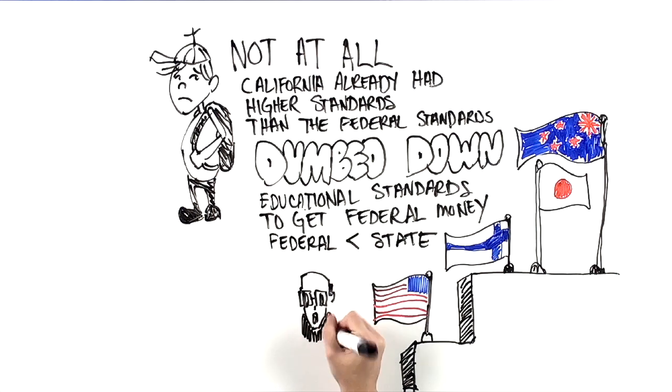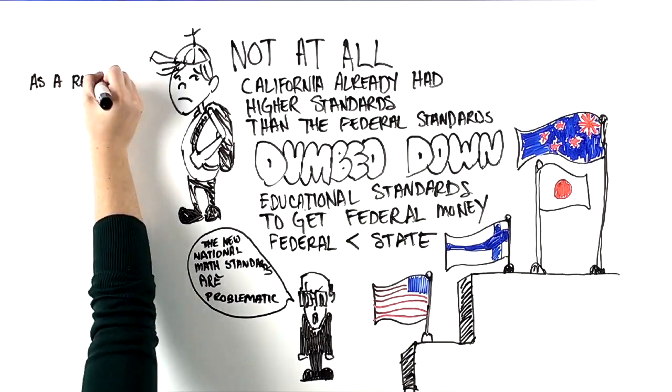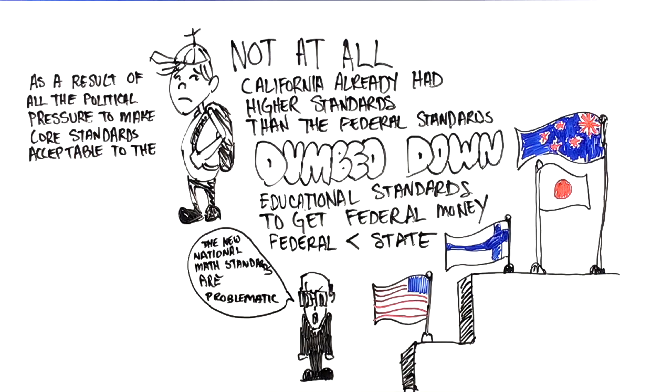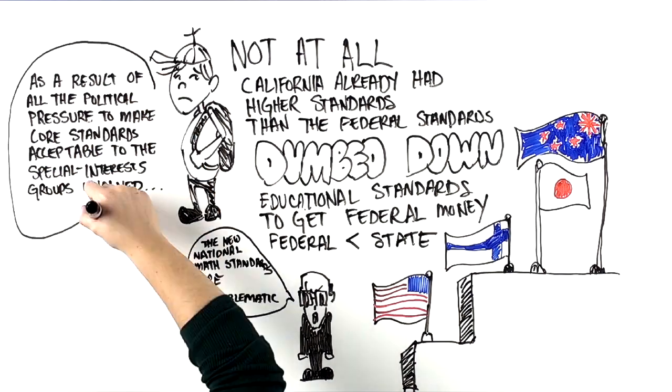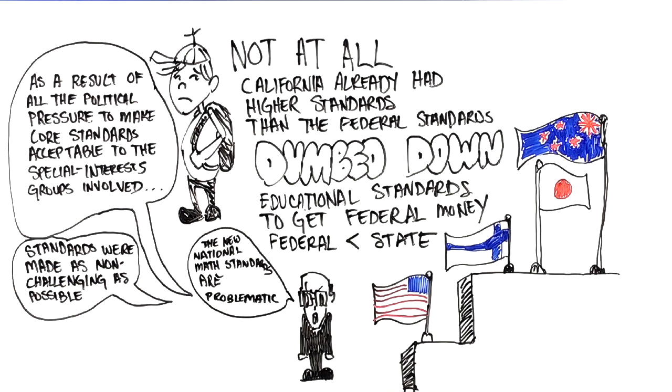The only mathematician on the validation committee for the national standards actually thought the new national math standards were problematic. What was the problem? As a result of all the political pressure to make core standards acceptable to the special interest groups involved, he said, the standards were made as non-challenging as possible. They were written to reflect very low expectations.